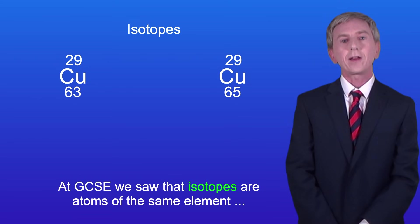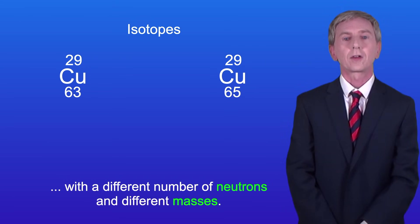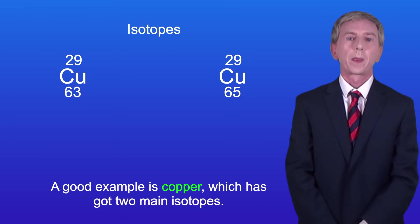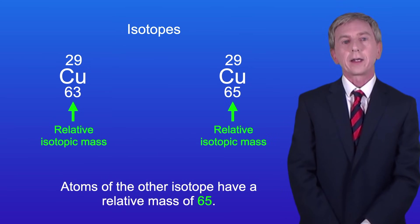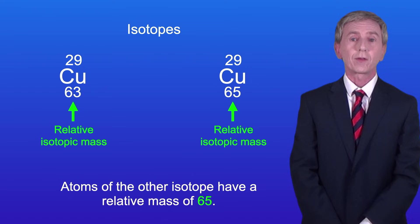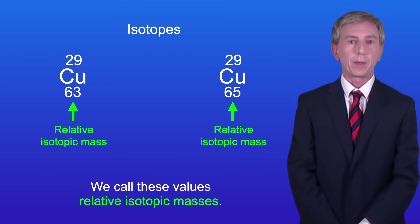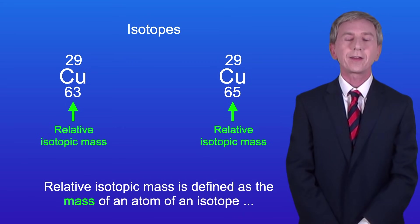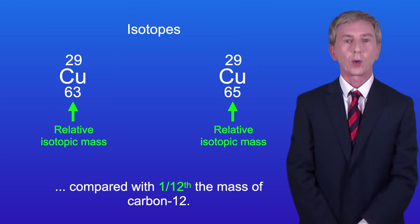At GCSE we saw that isotopes are atoms of the same element with a different number of neutrons and different masses. A good example is copper which has got two main isotopes. Atoms of one of the isotopes have a relative mass of 63 and atoms of the other isotope have a relative mass of 65. We call these values relative isotopic masses. Relative isotopic mass is defined as the mass of an atom of an isotope compared with one twelfth the mass of carbon-12.